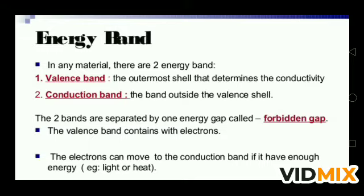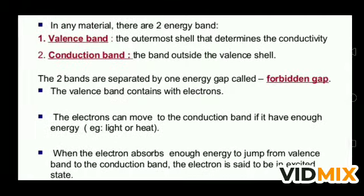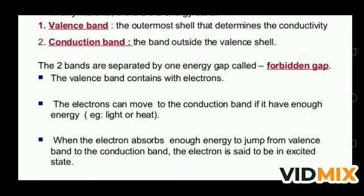The width of the energy gap depends upon the nature of the substance. As you increase the temperature, the forbidden energy gap decreases very slightly, so electrons can move to the conduction band if they have enough energy. If electrons gain some energy due to light or heat, they can move to the conduction band. When electrons absorb enough energy to jump from the valence band to the conduction band, the electron is said to be in an excited state.